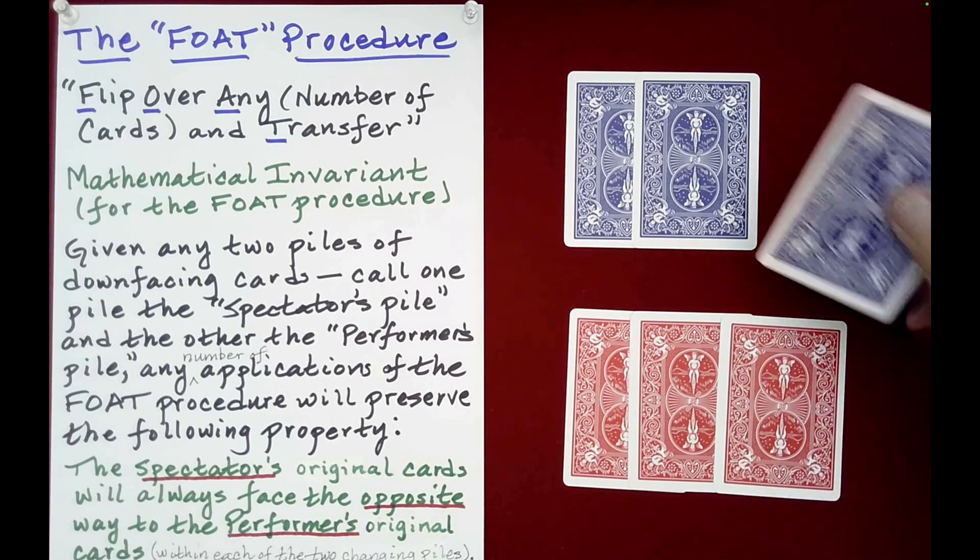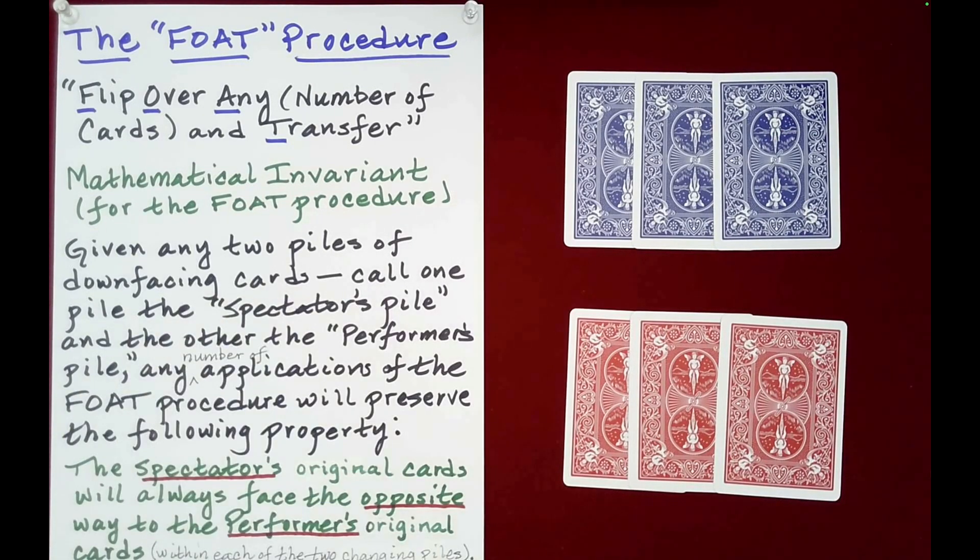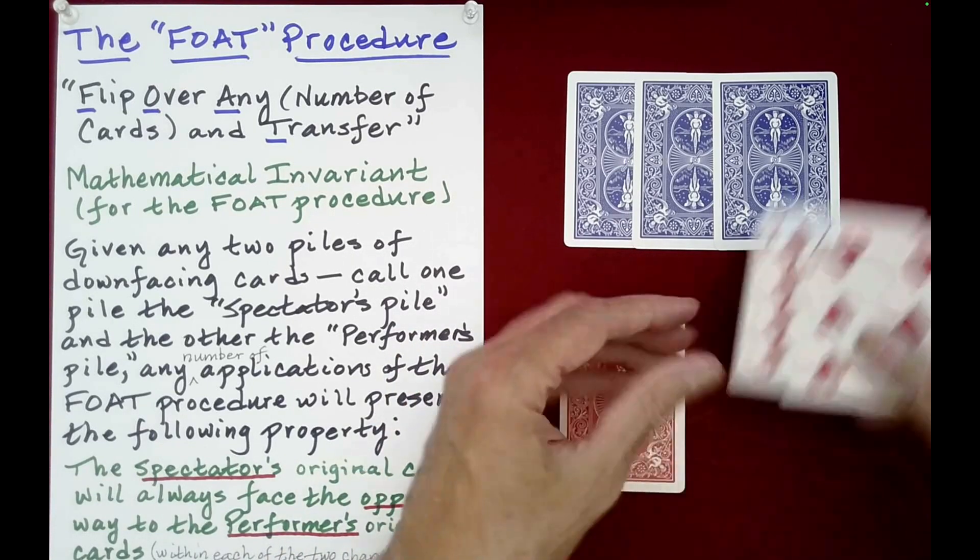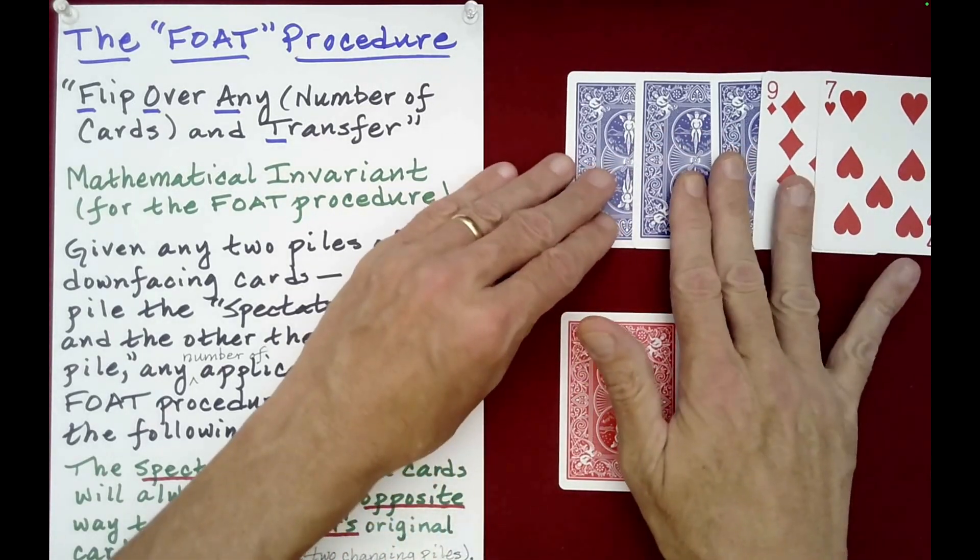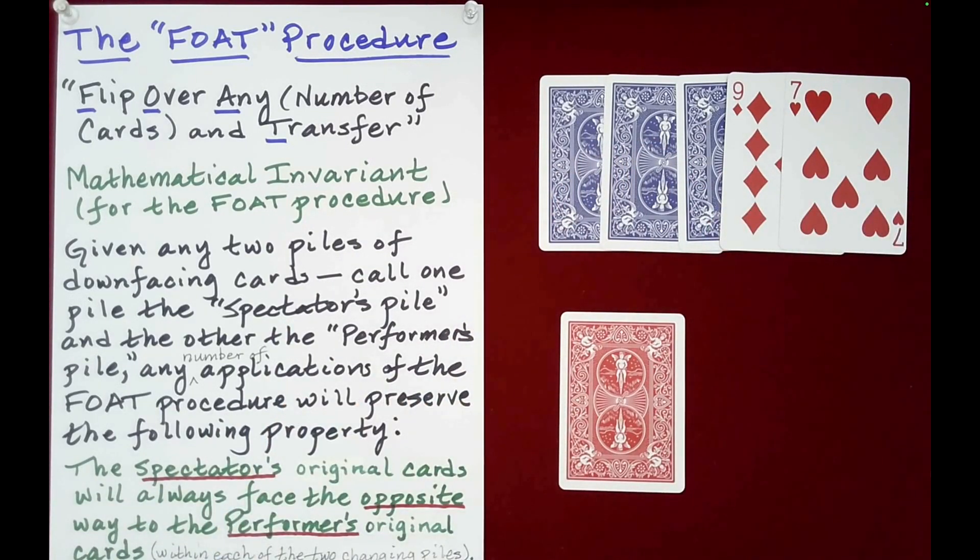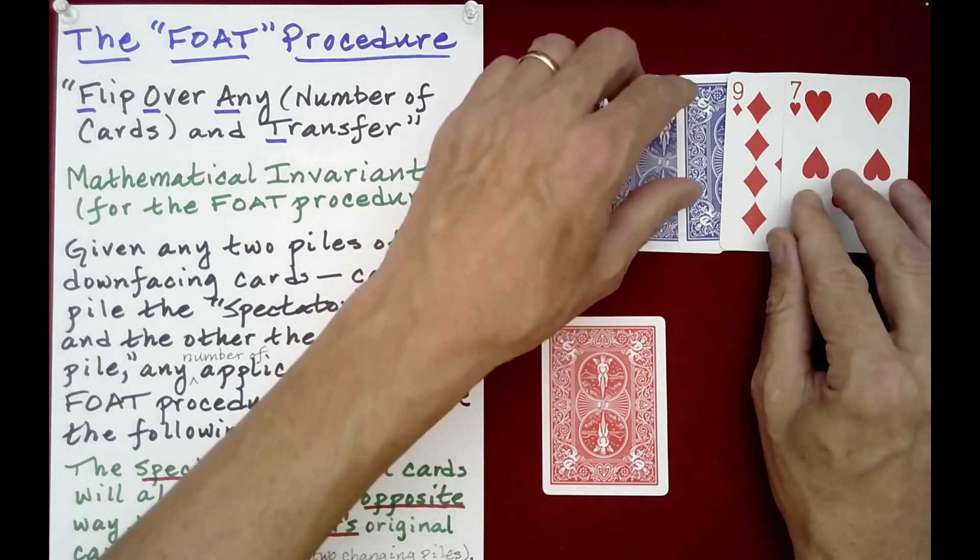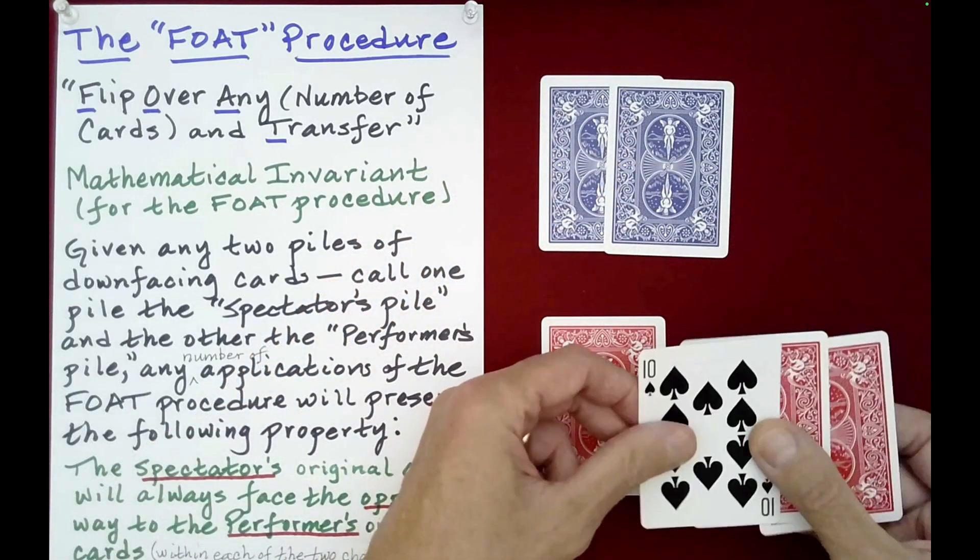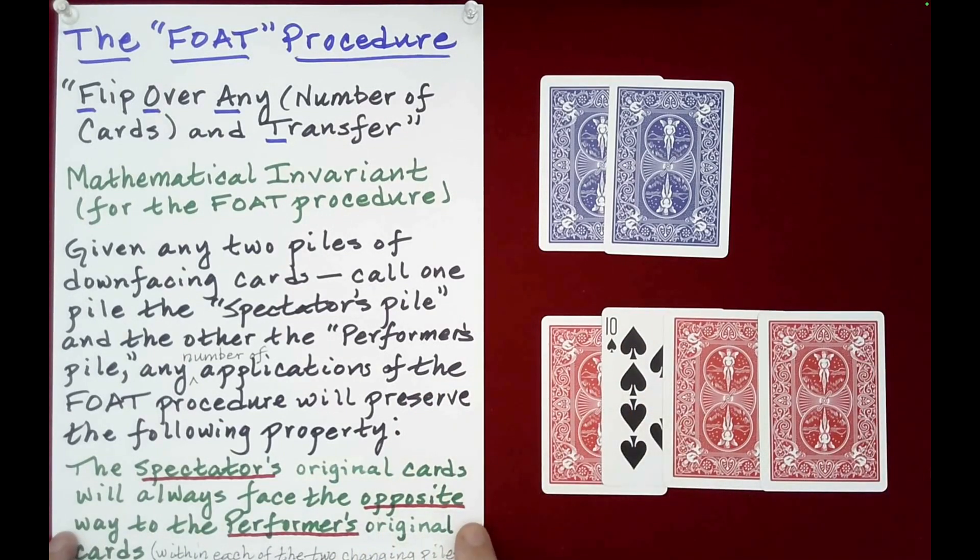So what we'll find is it doesn't matter how many cards are transferred and you can do this many, many, many times back and forth. This property here will hold. So that's why it's called a mathematical invariant. This will always be true given this procedure of flipping over any number of cards and then transferring them to the other pile. For example, if we now take two from the performer's pile, flip them over, and then set them on top of the spectator's pile, it is still the case that the spectator's cards, namely the blue ones, are facing the opposite way to the performer's cards.